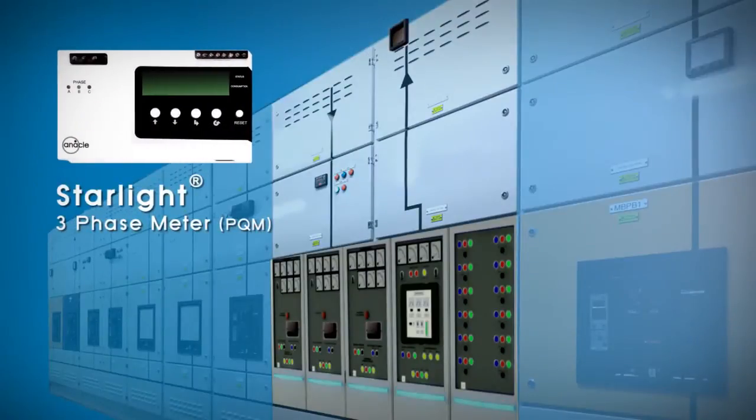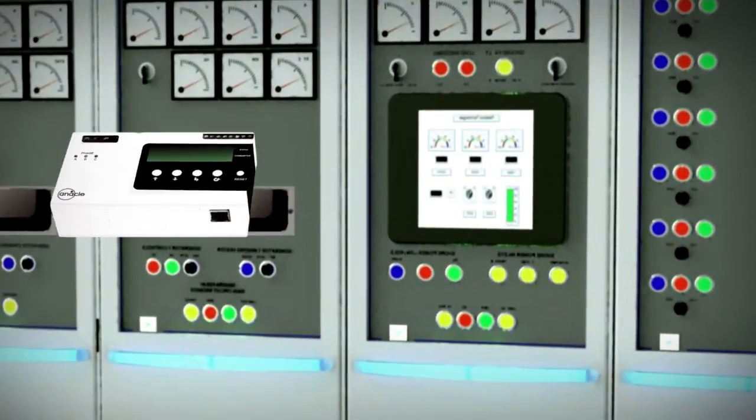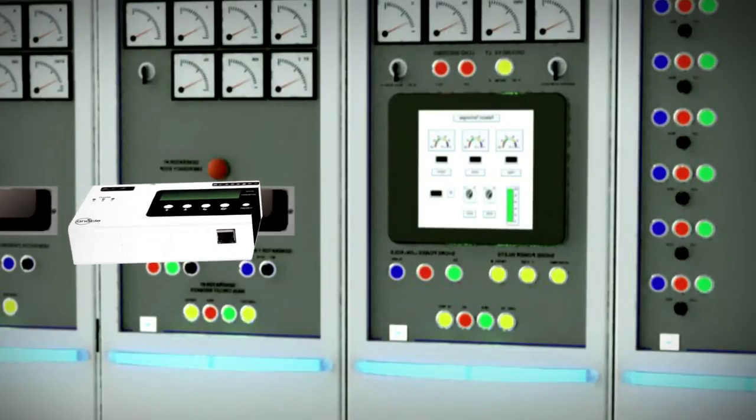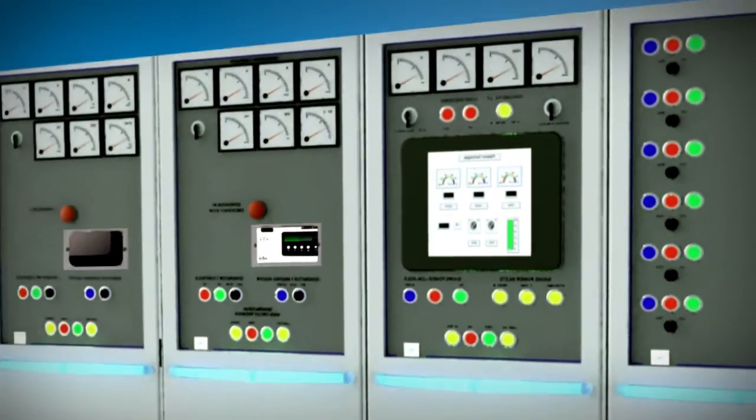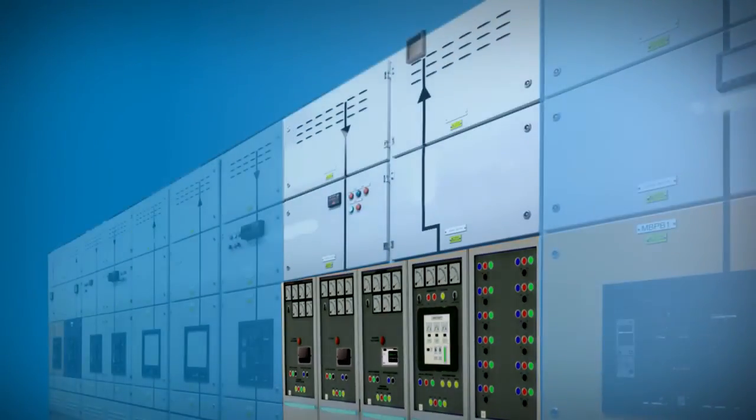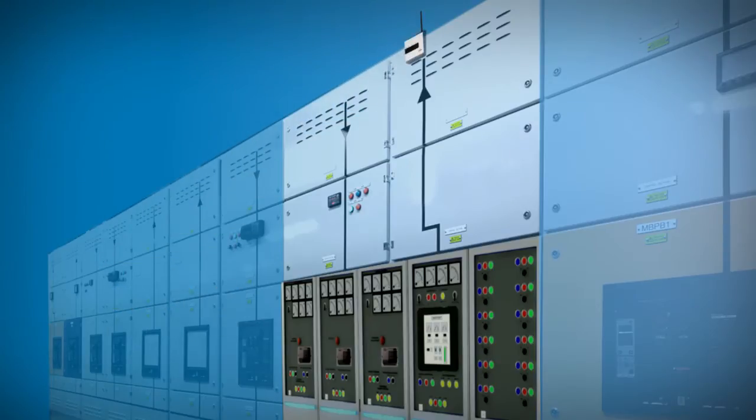Starlight 3 Phase Meter measures energy usage of heavy equipment. Mounted onto the switchboard panel, the meter measures the electricity flow of the load. The data will be transmitted to the data server via the Starlight Communicators wirelessly. Multiple meters can also be connected to a single communicator via an Ethernet hub or switch.